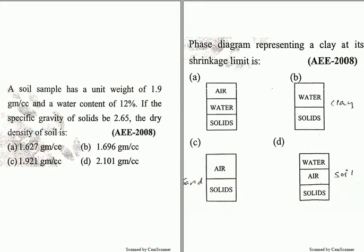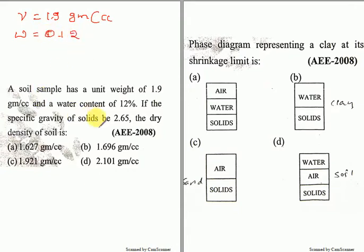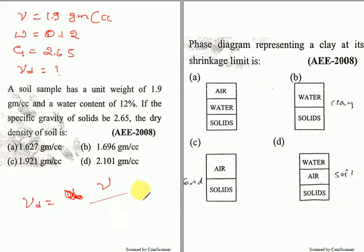Welcome. Let us continue with the question: a soil sample has a unit weight of 1.9 gram per centimeter cube and the water content is equal to 0.12. If the specific gravity of the solids is 2.65, then dry density γd is what? So γd is equal to γ divided by 1 plus E. Unit weight is 1.9, divided by 1 plus E.